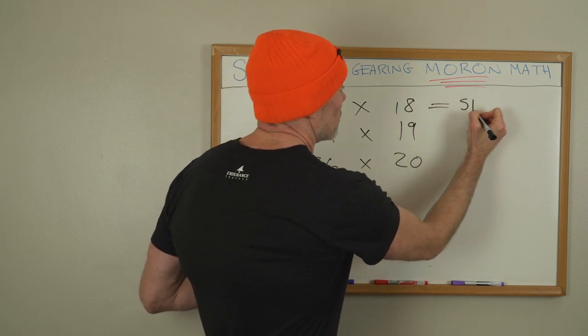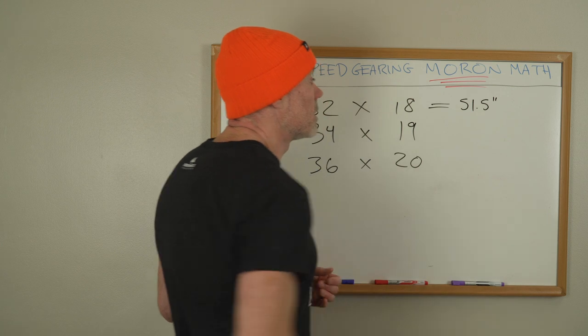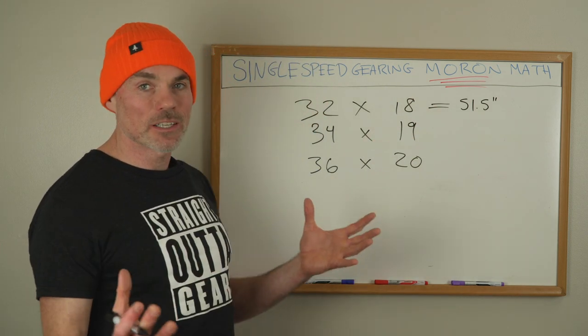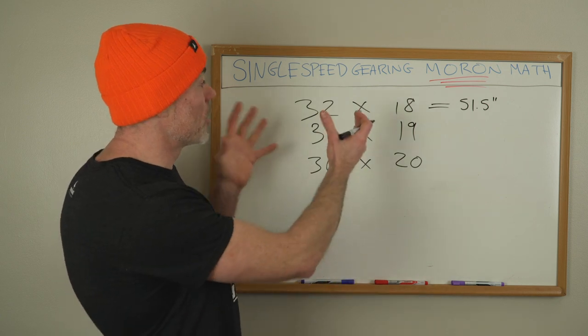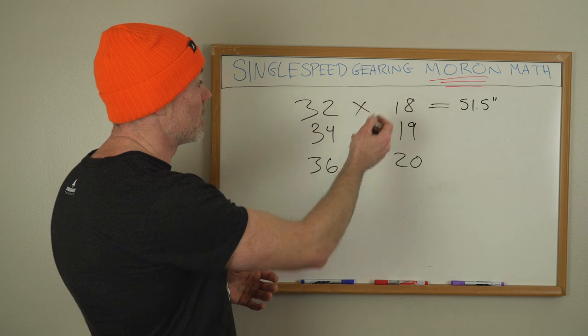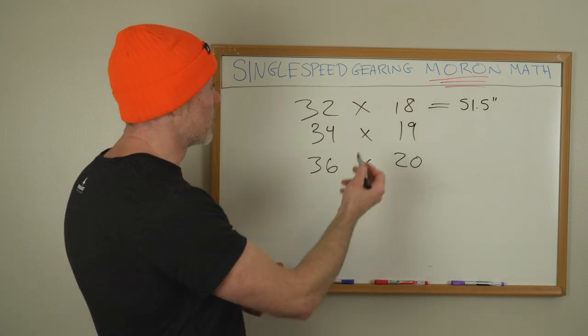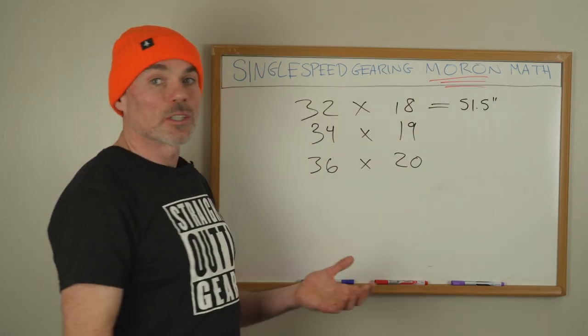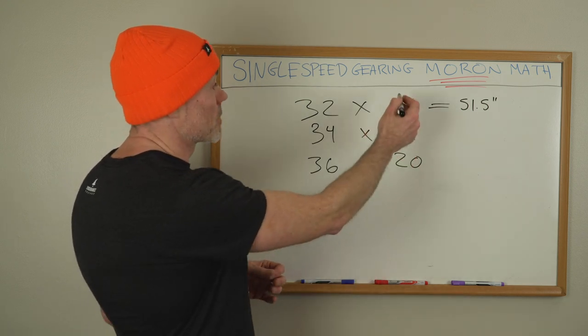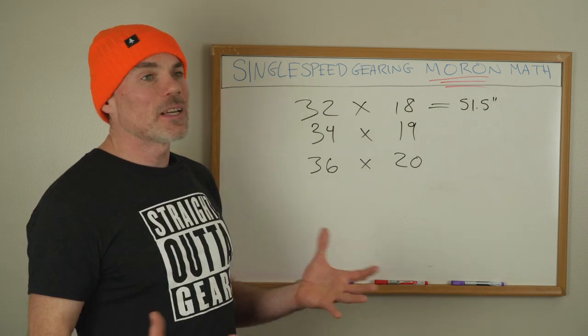Those are all roughly the same effective gear, you know, within a few decimal points. I know offhand 32 by 18 is 51.5 gear inches. We're going to talk about what gear inches mean in a minute. So one way to talk about single speed gearing is to just kind of know what this means. You know, if you've ridden a 32-18, you know that going to a 32-20 is going to be easier. That's going to, now I mean now you understand it.